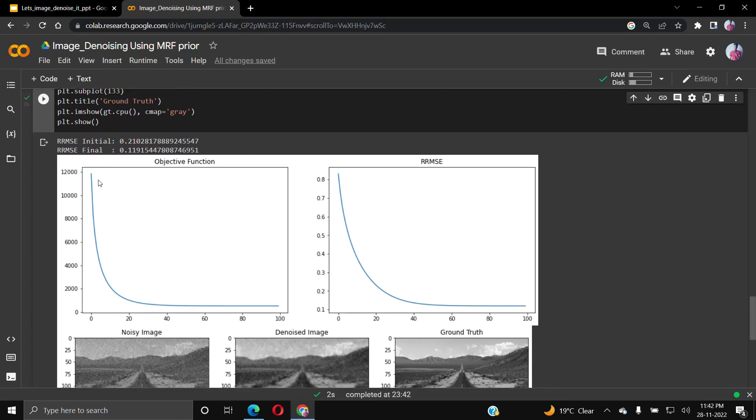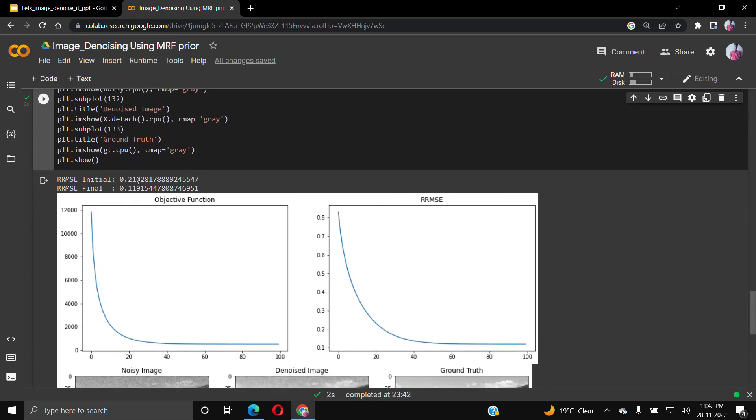This graph explains how the objective function loss is decreasing as we go through the number of epochs. After each epoch we get a denoised image and check it with the ground truth image.